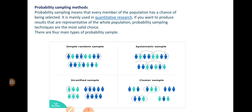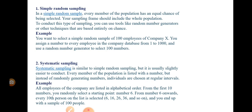Simple random sampling: in a simple random sample, every member of the population has an equal chance of being selected. Your sampling frame should include the whole population. To conduct this type of sampling, you can use tools like a random number generator or other techniques that are based entirely on chance.